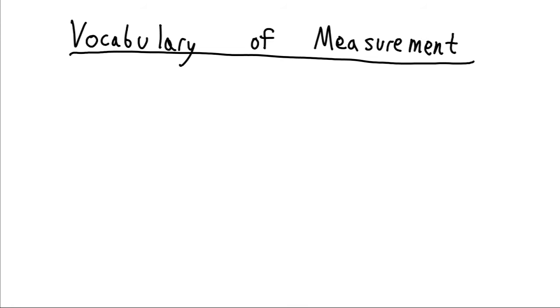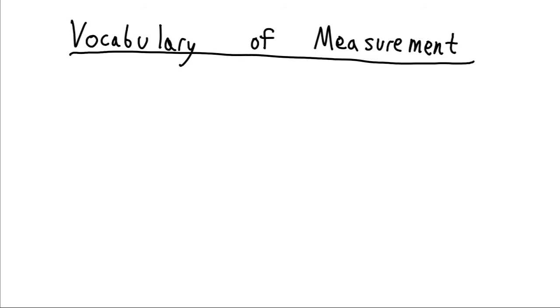In order to communicate the results of our experiments with other scientists, we're going to need to establish a vocabulary of measurement. This is something that's lacking during the early development of science. In the 19th century, France is the hub of scientific development. Within just the nation of France, there's over 250,000 types of unit.